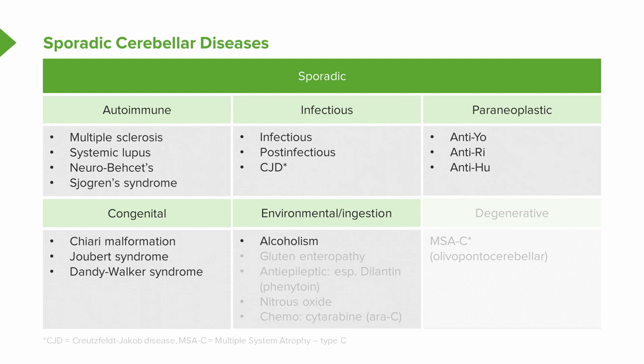Environmental toxins and ingestions frequently affect the cerebellum, which is metabolically active and working constantly. Alcoholism is one of the most common causes of cerebellar dysfunction. Gluten enteropathy can affect cerebellar circuitry and cause ataxia and dysmetria. Many anti-epileptic drugs, specifically Dilantin, can cause long-term cerebellar toxicity. Nitrous oxide and various chemotherapy agents can also cause dysfunction; cytarabine is the chemotherapy to think about for dysmetria and cerebellar abnormalities.